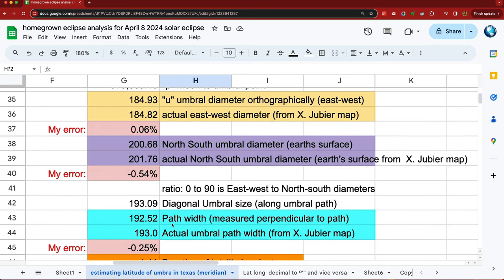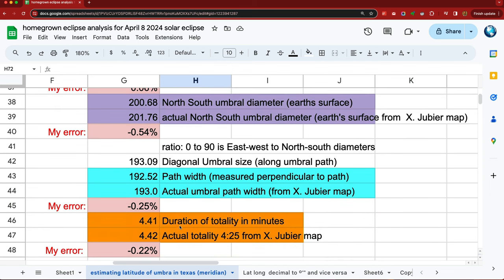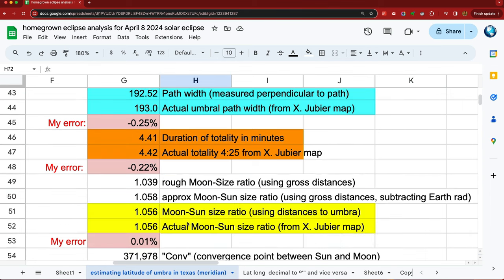And what's the path width? Sort of like the swath of countryside that's touched by the umbra. And the duration of totality. So at location X, 4.41 minutes. And the moon-sun size ratio. The moon is slightly larger than the sun so that we have totality.